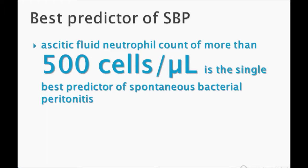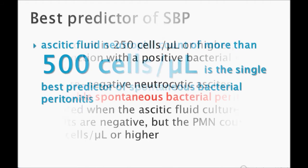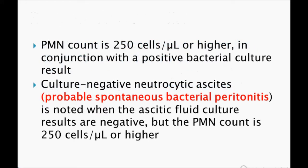The single best predictor of SBP is ascitic fluid neutrophil count greater than 500 cells per microliter. Sometimes they ask which is the best predictor — it's the ANC or PMN count. A PMN count of 250 cells or higher in connection with a positive bacterial culture result is also diagnostic.